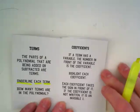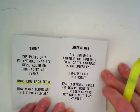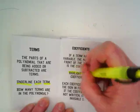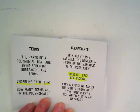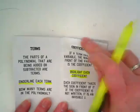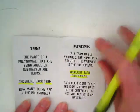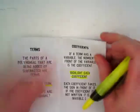So, coefficients. If a term has a variable, the number in front of the variable is the coefficient. We will be using our highlighter to highlight those coefficients today in our notes. Each coefficient takes a sign in front of it. If the coefficient is not written, it is an invisible one.